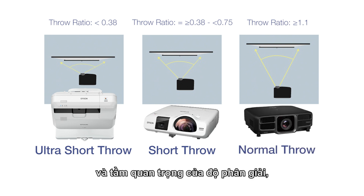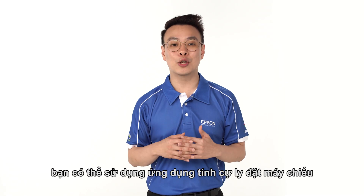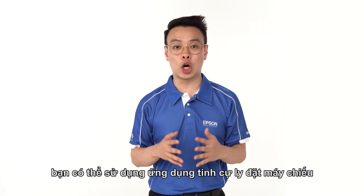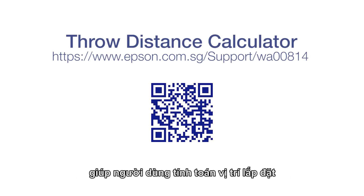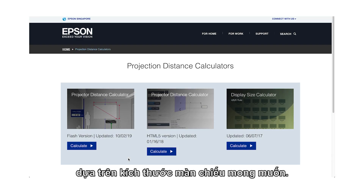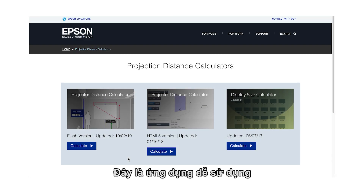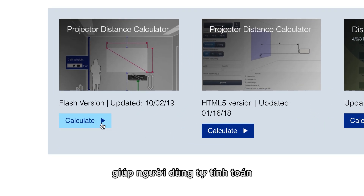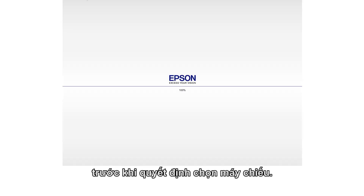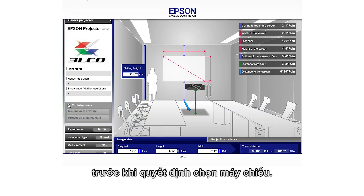After knowing your throw ratio and the importance of resolution, you can now make use of the throw distance calculator to provide recommendations. The Epson throw distance calculator generally allows users to calculate their mounting position based on the desired screen size. It is an easy-to-use application that enables users to do their own calculations before determining their choice of projector.